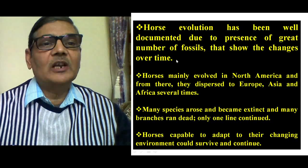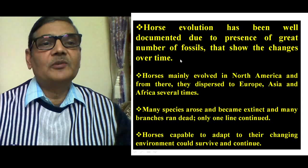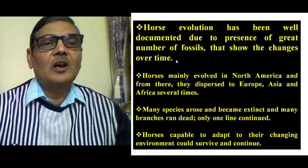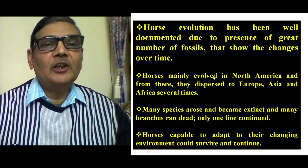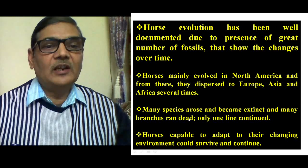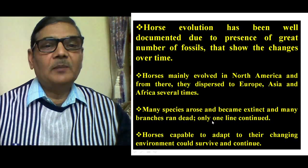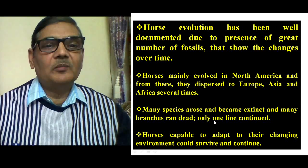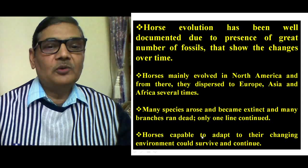For the last 55 million years, we can see what kind of changes have occurred in the shape, size, morphology, and internal structure of horses — all deducible from fossil remains. Horses mainly evolved in North America and from there dispersed to Europe, Asia, and Africa several times. Many species arose and became extinct, but only one line continued, from Eohippus in the Eocene epoch till now. Horses capable of adapting to their changing environment could survive and continue.